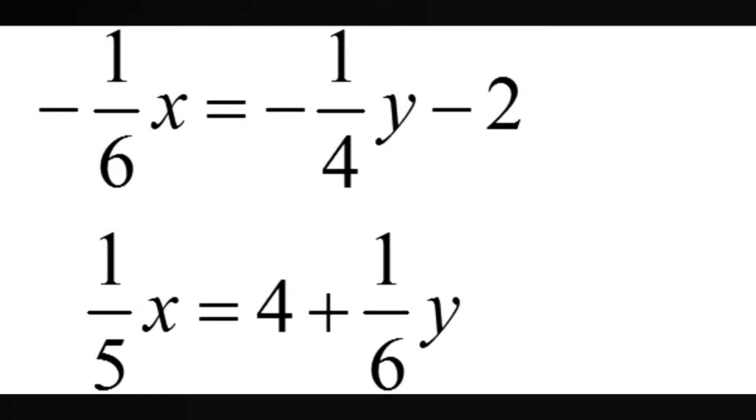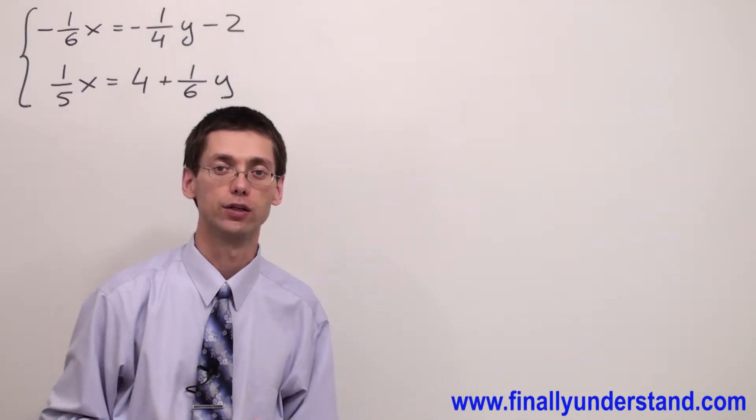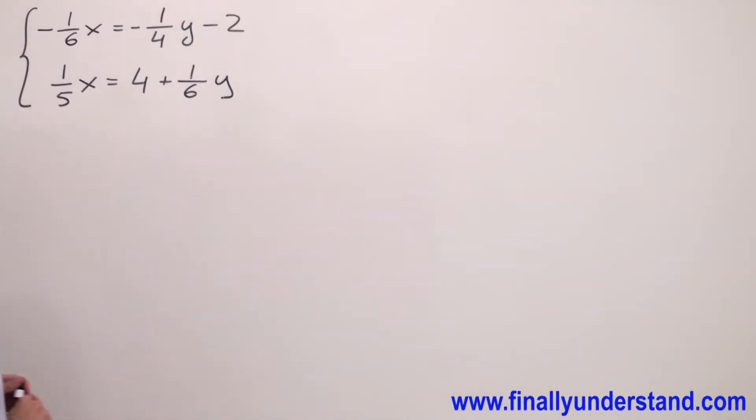We have another example on the board. The very first thing we're supposed to do in this case is organize the equations, so I have to make sure that on the left side I'm going to have x and y. That's why I'm going to move this negative 1/4 y to the left side.